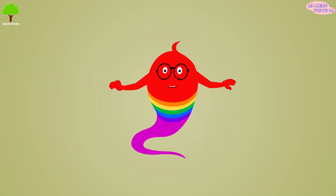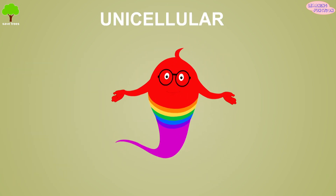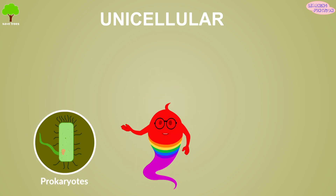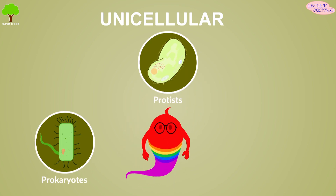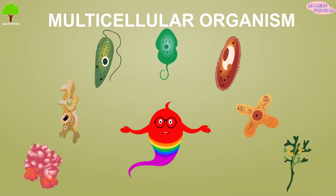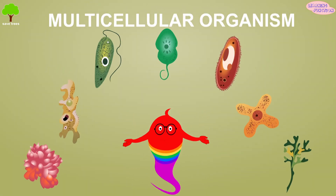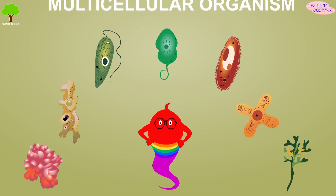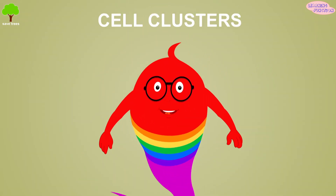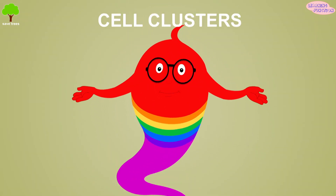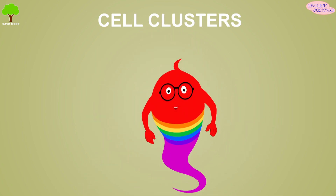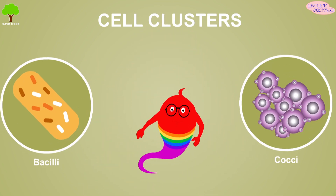Most of the microbes are single cell. They're called unicellular organisms. Examples include prokaryotes, most protists, and some fungi. Some microorganisms are multicellular, for example, the protist kingdom. Some species stick together to form groups or clusters of cells that are quite distinctive, for example, bacilli and cocci.